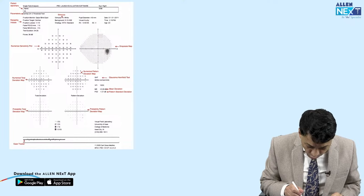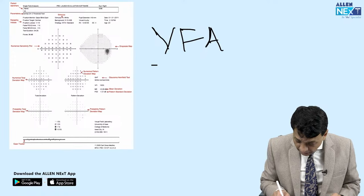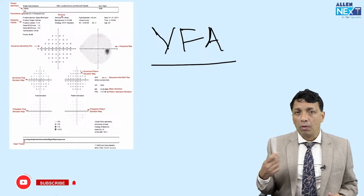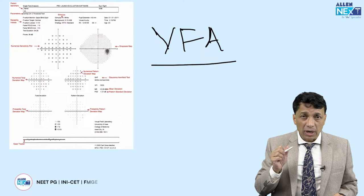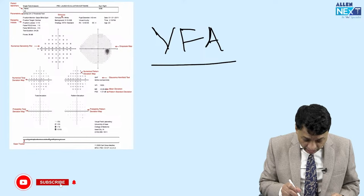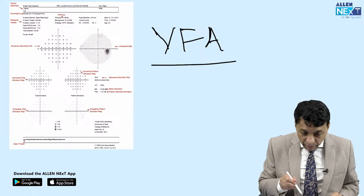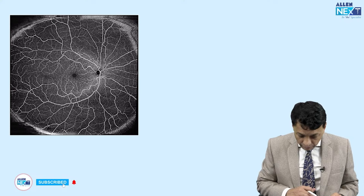Look at this printout — you often get these kinds of printouts and are asked what it is measuring. This is the visual field printout, sometimes called VFA, or Humphrey's Visual Field Analysis. Whenever you're suspecting glaucoma, you do visual field analysis on the Humphrey perimeter, which is the gold standard. This is how the printout looks — with a gray scale, a pattern chart, and a total chart. You should be able to identify this as a visual field analysis chart for glaucoma.